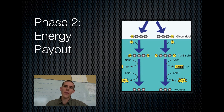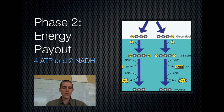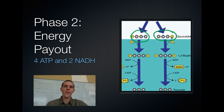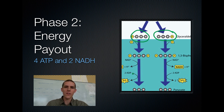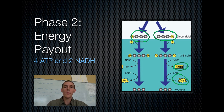In phase two, we actually start making energy the body can use. Our molecule has broken down into those two three-carbon molecules, each still with a phosphate hooked on. Glycolysis itself is actually about ten steps long — you don't have to know all of them, just the overview. From each three-carbon molecule you get an NADH molecule and two ATP molecules, so you get back the ATP you spent plus more. You also get NADH, which carries a high energy electron over to the electron transport chain.